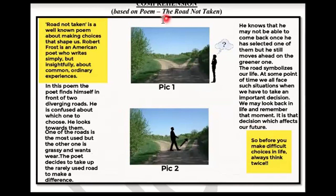Like, the poem's name is 'The Road Not Taken,' but in the worksheet it is not written correctly in the heading or in the question. But I have told you that the poem's name is 'The Road Not Taken.' Now let's see what is written in the worksheet.